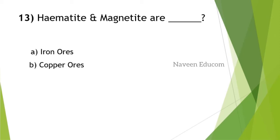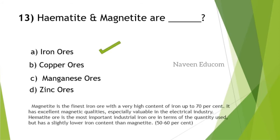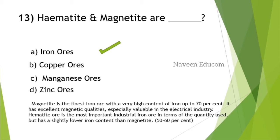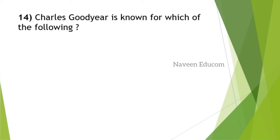Hematite and magnetite are iron ore, copper ore, manganese ore, or zinc ore? The answer is iron ore. Magnetite is the finest iron ore with very high iron content up to 70 percent. It has excellent magnetic qualities, especially valuable in the electrical industry. Hematite ore is the most important industrial ore in terms of quantity used but has slightly lower iron content than magnetite. Even the percentage is given there.